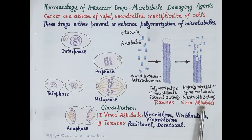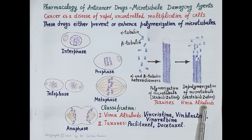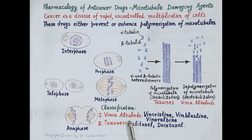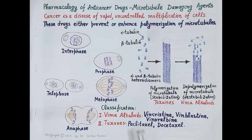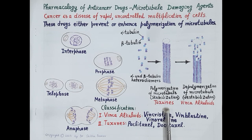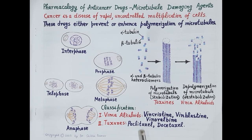Based on mechanism of action, microtubule damaging agents are classified into two broad categories: vinca alkaloids, which cause depolymerization and prevent formation of spindle fibers — examples include vincristine, vinblastine, and vinorelbine — and taxanes, which cause stabilization of polymerized microtubules and prevent shortening of spindle fibers. Drugs in the taxane class are paclitaxel and docetaxel.